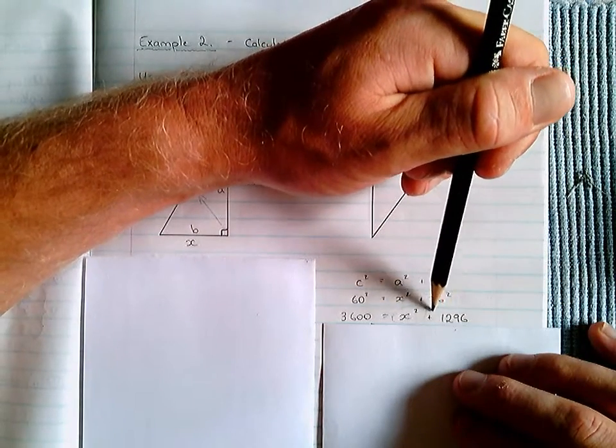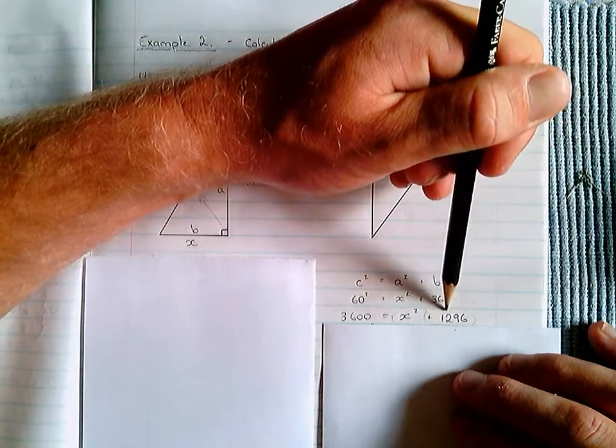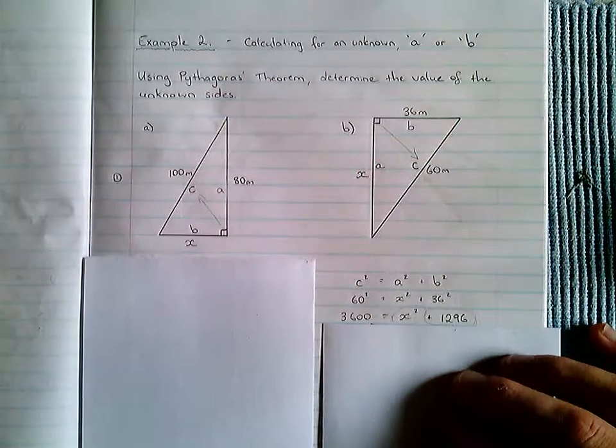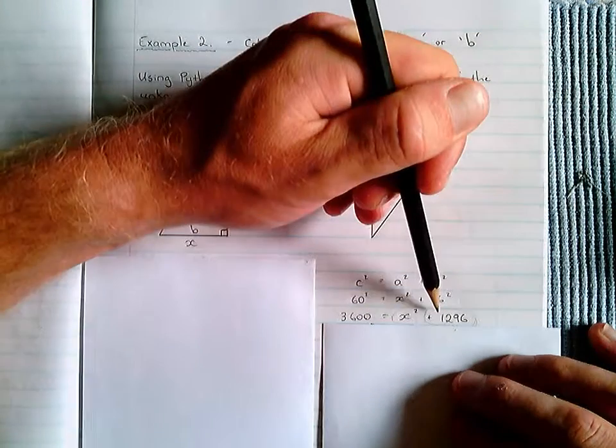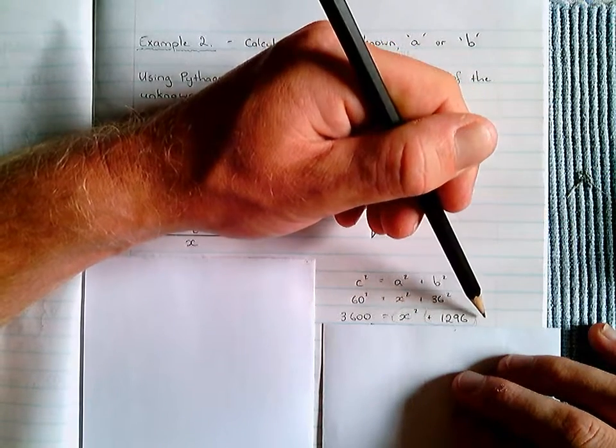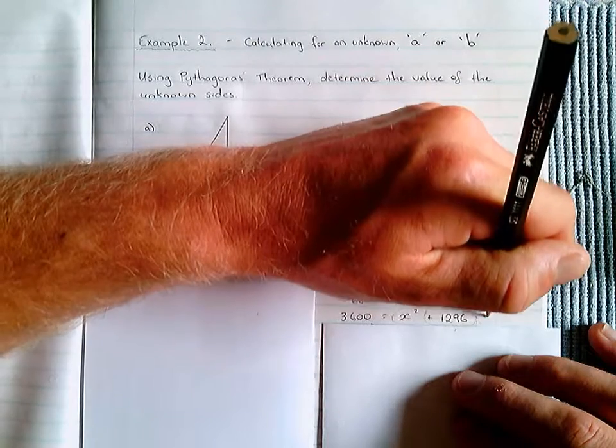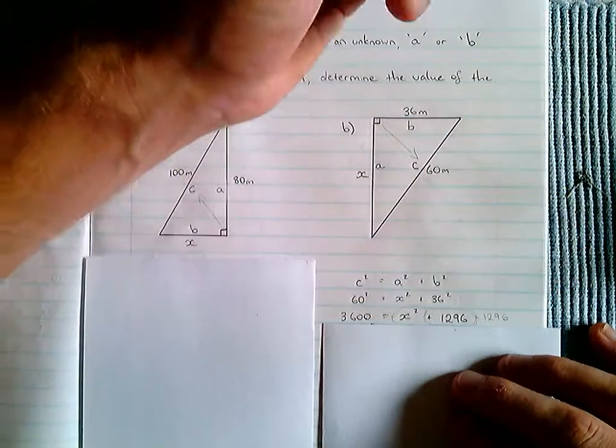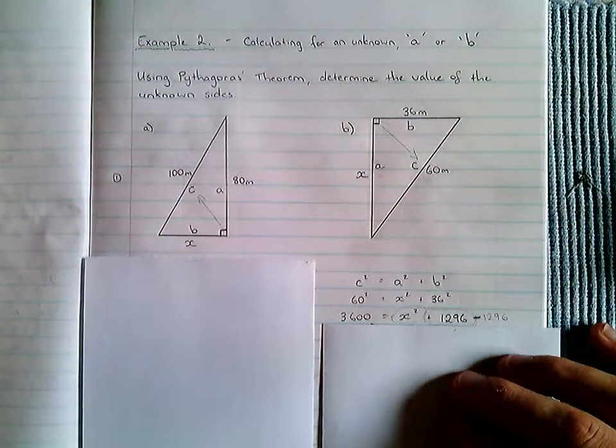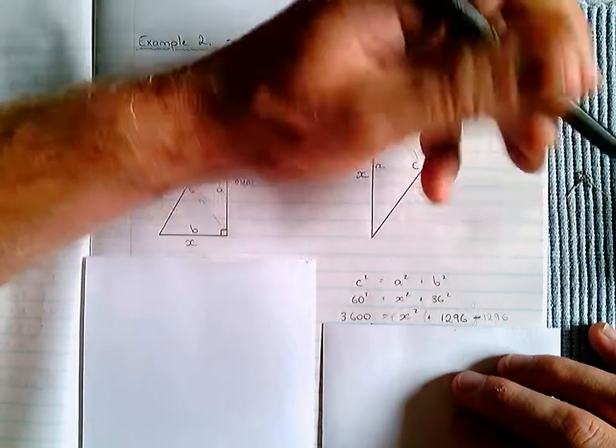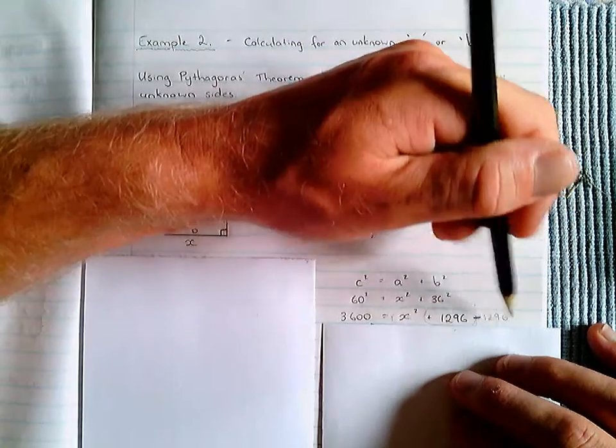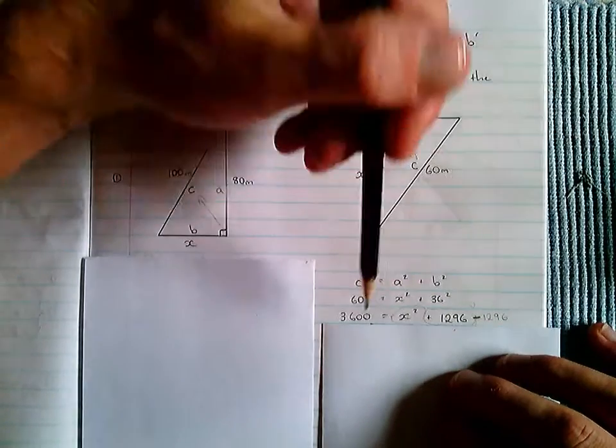So, on the right-hand side, I've got this plus 1,296. And I'm going to get rid of it. If I get rid of it, you can imagine I'd have X squared on the right-hand side by itself, and we would have something similar to example 1. So, to get rid of this value here, what I need to do is take 1,296. If you can imagine me writing take 1,296 on that side of the equation, I would be left with 0, because 1,296 take 1,296 is 0, therefore I've eliminated this value. But to do that to the right-hand side, I also need to do it to the left-hand side.